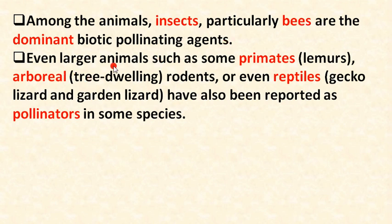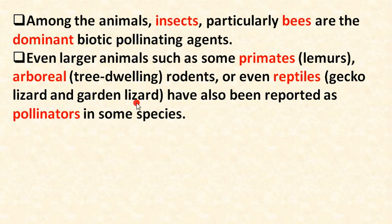Even larger animals such as some primates including lemurs, arboreal (tree-dwelling) rodents, and even reptiles like lizards and garden lizards have also been reported as pollinators in some species.